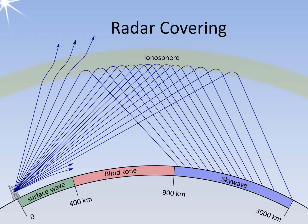The AN-TPS-71 achieves operational ranges between 900 and 3,000 kilometers. The achievable ranges are illustrated in the graphic provided, though the image is not drawn to scale — the area designated for the space wave would need to be three times larger than represented. Additionally, the ionosphere, particularly the F layer, is depicted in an exaggerated manner; this layer is actually located at an altitude of approximately 300 kilometers. Maintaining accurate scales would render the principle of operation unrecognizable.